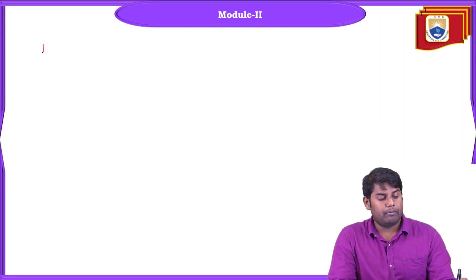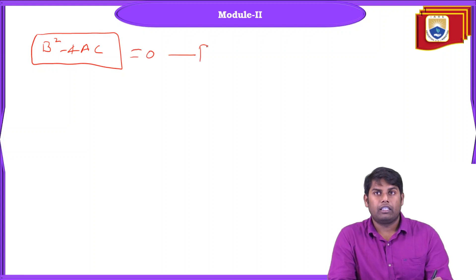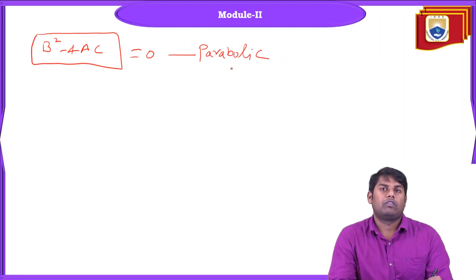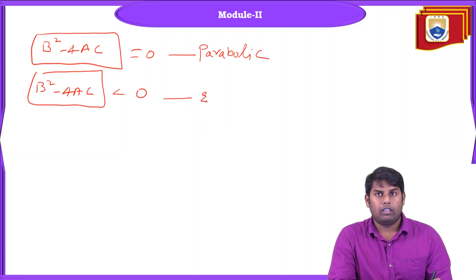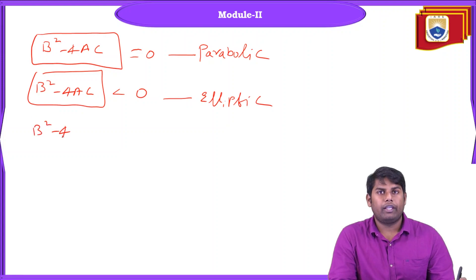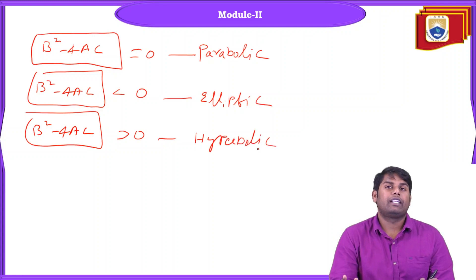The standard discriminant is B² − 4·A·C. If B² − 4AC = 0, then the equation is parabolic. If B² − 4AC < 0, the equation is elliptic. If B² − 4AC > 0, the equation is hyperbolic. These are the three classifications.